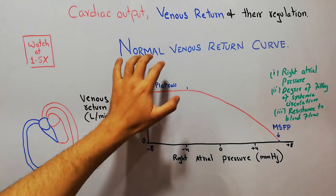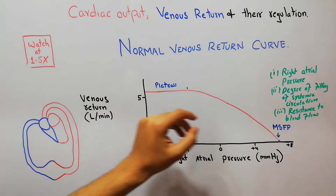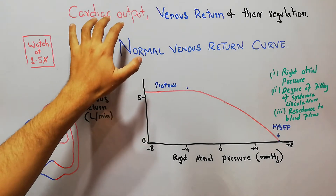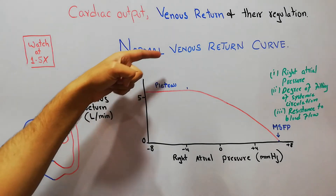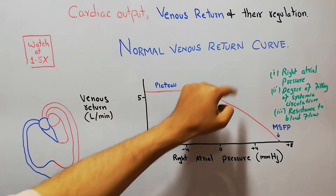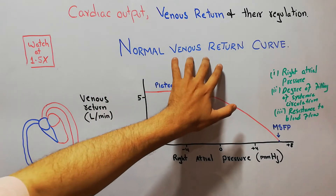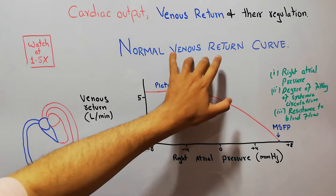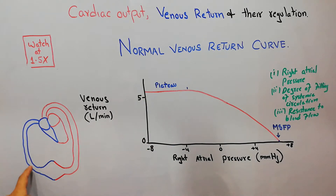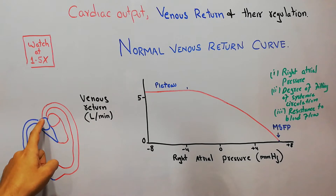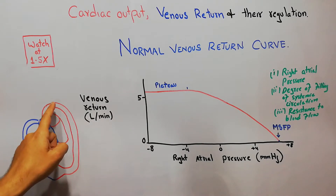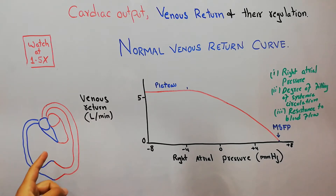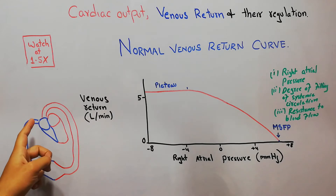Today we are going to talk about the normal venous return curve, as we are discussing the chapter of cardiac output, venous return, and their regulation. Venous return is simply the amount of blood that returns to the heart every minute, whereas cardiac output is the amount of blood pumped by the heart per minute.